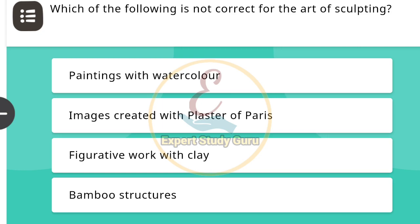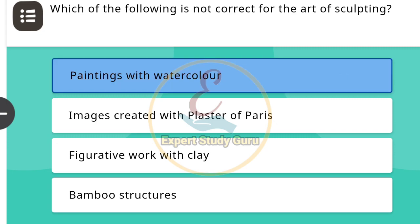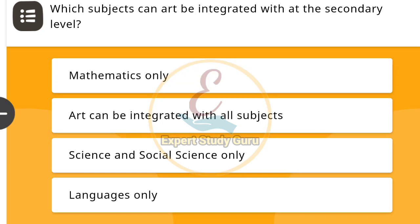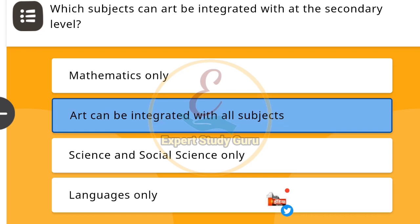The correct answer is paintings with watercolor. Next: Which subjects can art be integrated with at the school level? The correct answer is art can be integrated with all subjects.